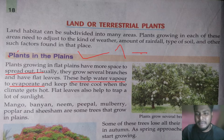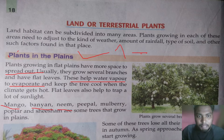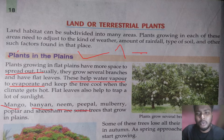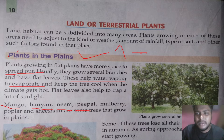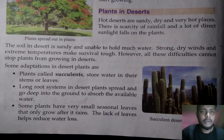The types of plants that grow in the plain region include mango, banyan, neem, apple, mulberry, and sesame. Some trees lose their leaves in the autumn season, and as spring approaches, new leaves also come on the branches.